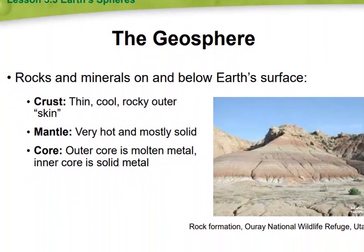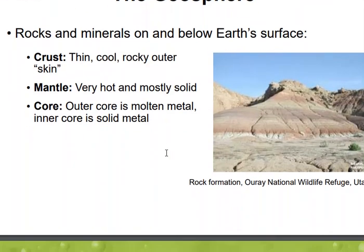The geosphere consists of the crust, the mantle, and the core — rocks and minerals on and below Earth's surface. The crust is a thin, cool, rocky outer skin of the Earth. The mantle is very hot but mostly solid. The outer core is molten metal, and the inner core is solid metal. That's your geosphere.